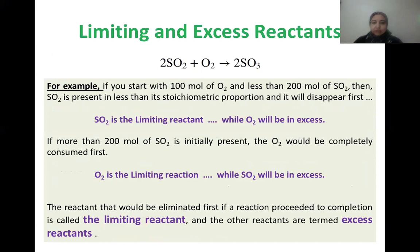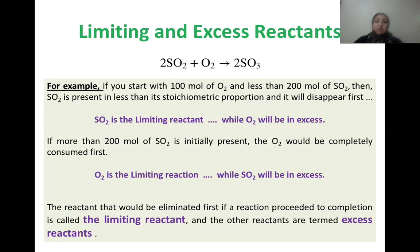Now suppose we keep 100 moles of O2 but introduce a smaller amount of SO2 — say 100 moles instead of 200. SO2 is introduced in a lesser amount than required by the stoichiometric reaction. All the O2 will react with all the SO2, but some O2 will remain. This means O2 is in excess — more than the stoichiometric requirement — while SO2 is the limiting reactant.